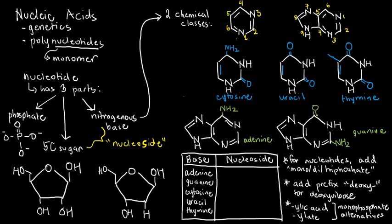Here we will be discussing the chemical basics of nucleic acids. I mentioned chemical because it's really difficult to discuss their function without going into the biology portion of this topic. Whenever we talk about nucleic acids, we always remember two major types: RNA and DNA, which have something to do with the field of genetics, genes, traits, heredity, and things like that.